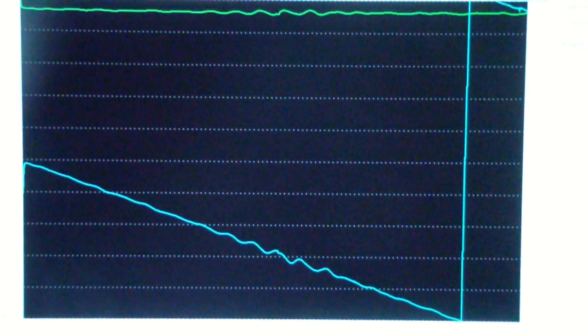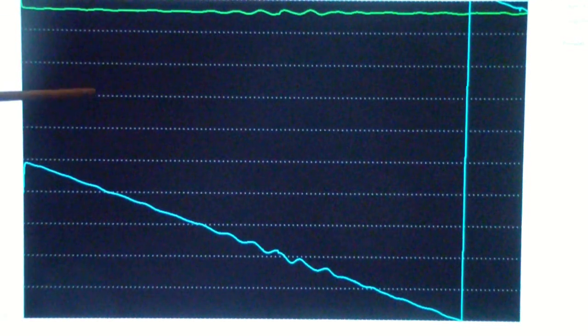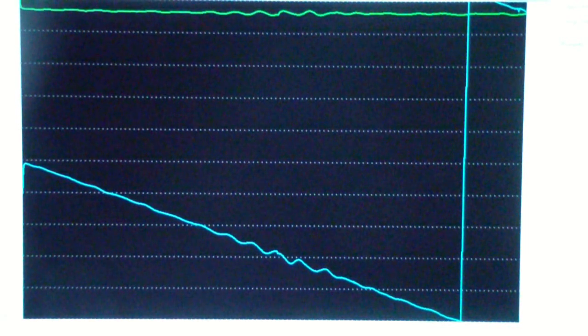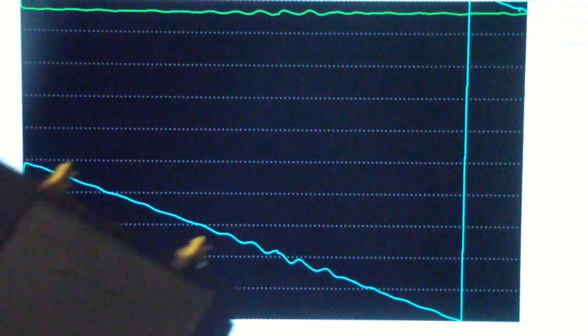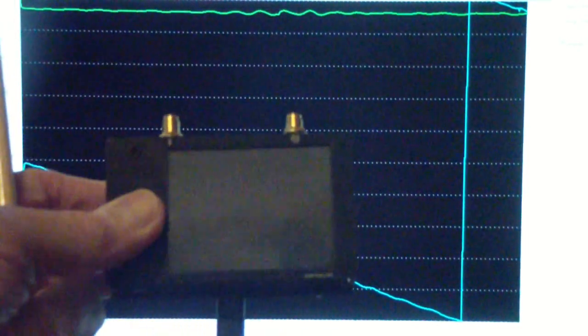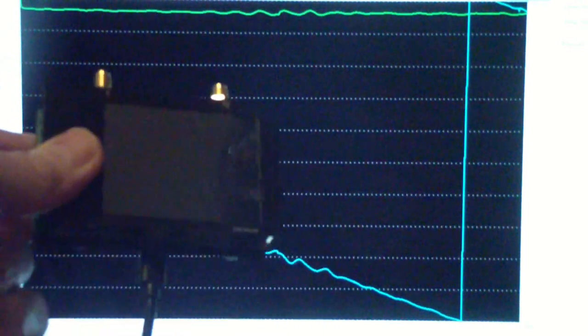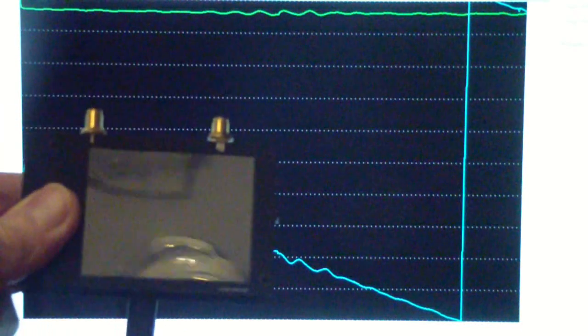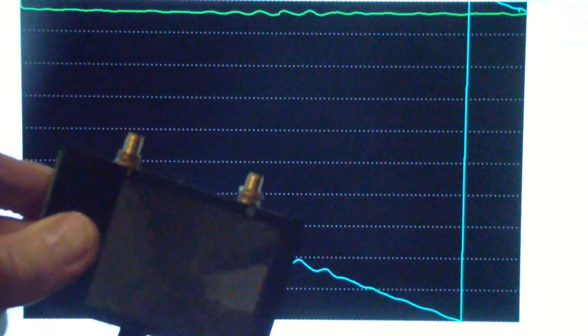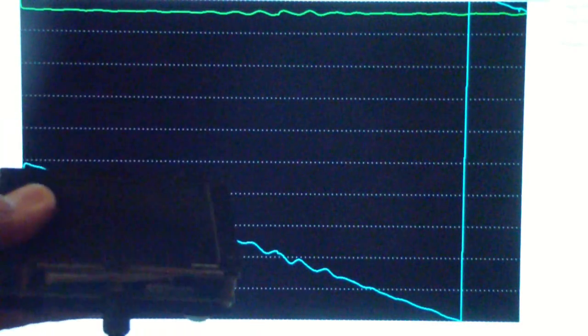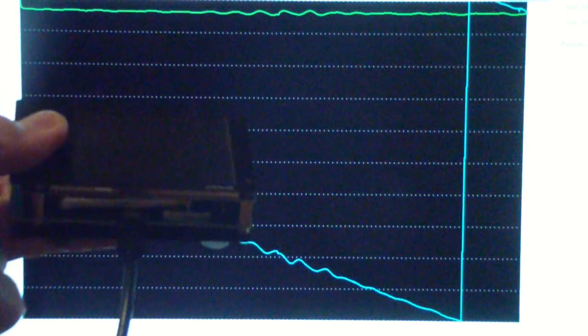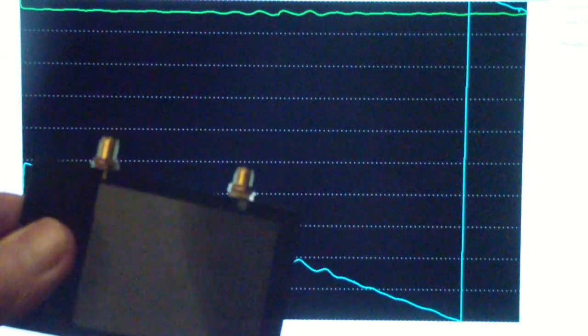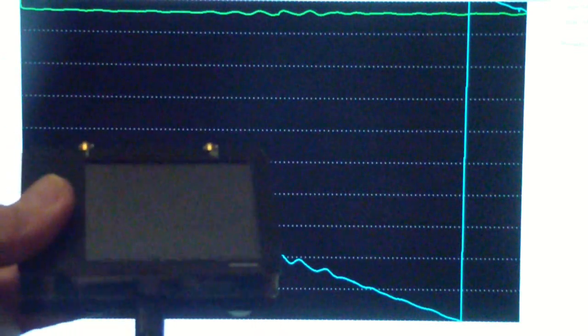which is a 3 gigahertz vector network analyzer, with the version 2 of the nano VNA that I've previously compared with the other nano VNAs. We've compared this with the nano VNAs that go up to 900 megahertz and 1.5 gigahertz. This one goes up to 3 gigahertz.